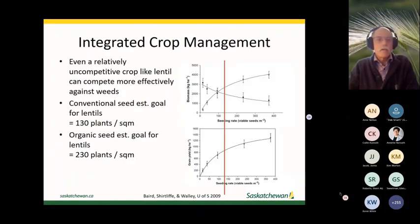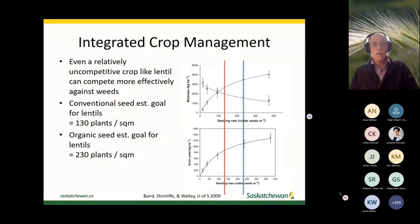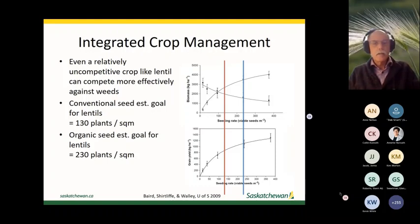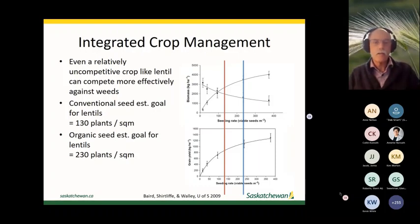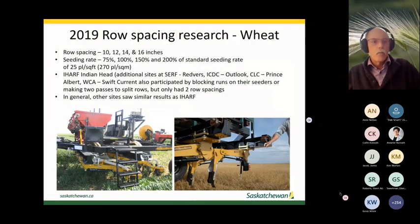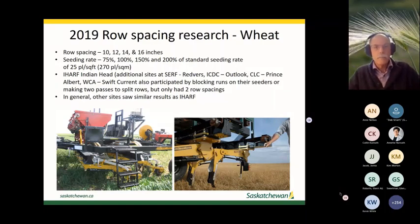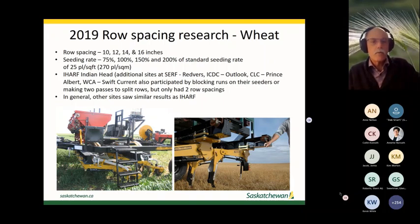Even in relatively uncompetitive crops there's a response to seeding rate. Steve Shirtliffe's grad student work showed that moving seeding rate up increases both crop yield and biomass while also decreasing weed biomass.